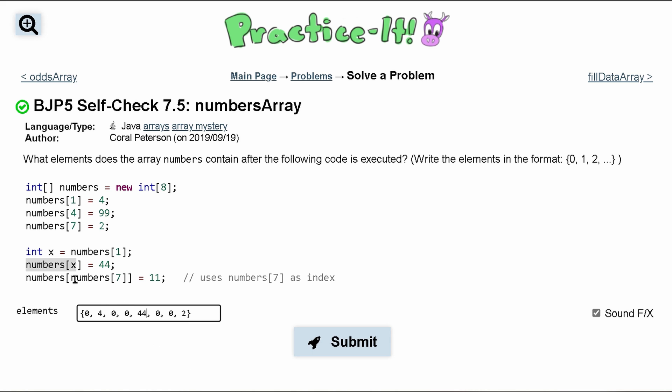And then we have this element numbers[7] we know is two. So at index two it's going to be 11. So zero, one - this is two right here. We'll replace this with 11.